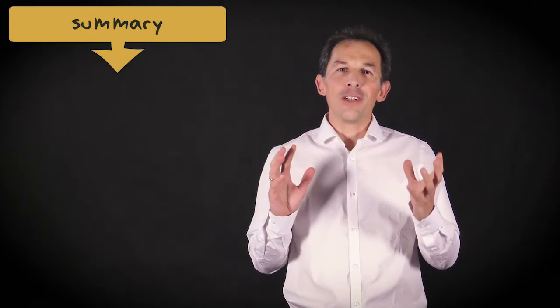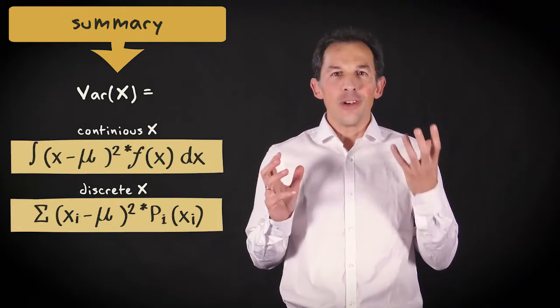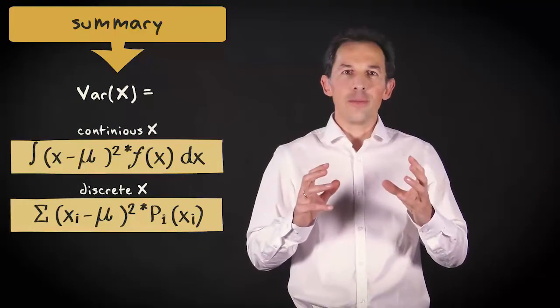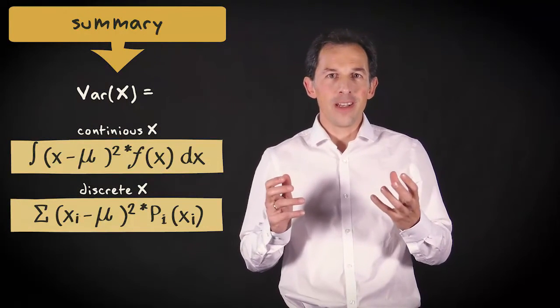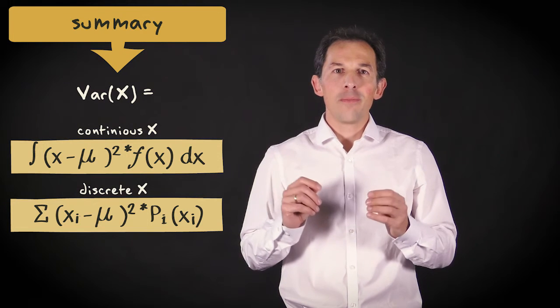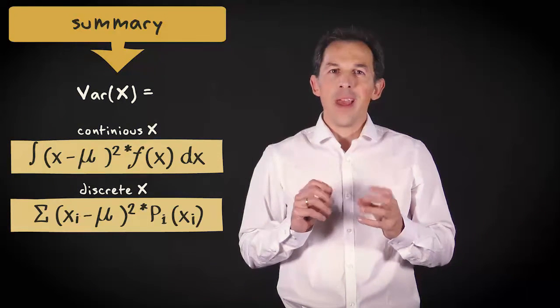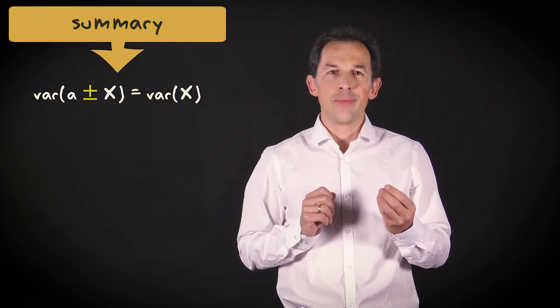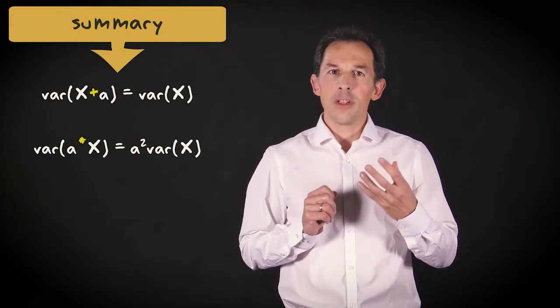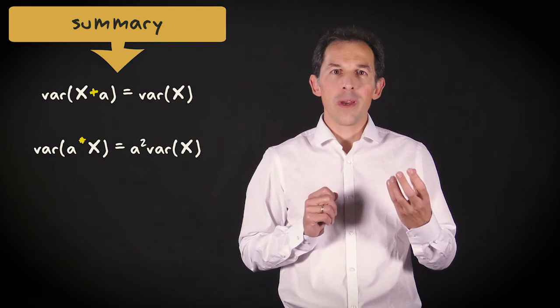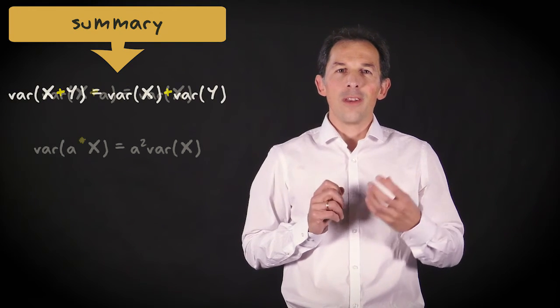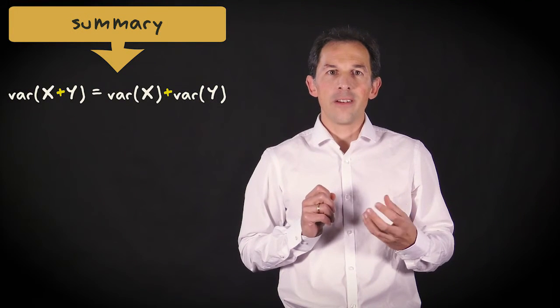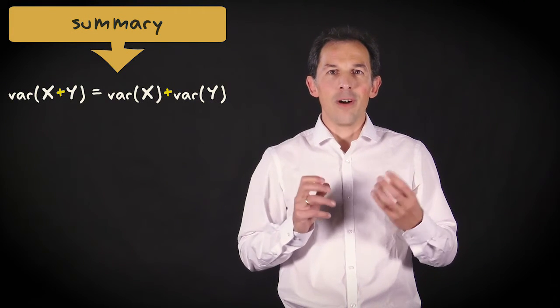Let me summarize what I have explained in this video. The variance of a random variable is the sum or integral over the square difference between the values that the variable may take and its mean times their probabilities. Adding a constant to a random variable doesn't change its variance, but multiplication with a constant leads to multiplication of the variance with a squared constant.